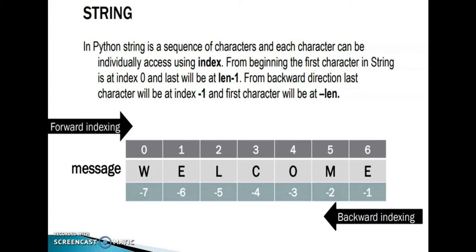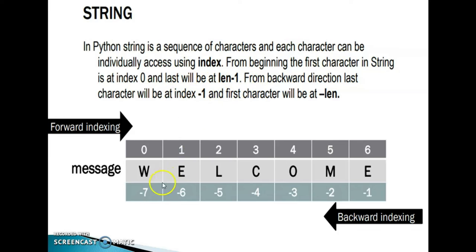In Python, a string is a sequence of characters and each character can be individually accessed using an index. For example, in 'welcome': W is at index 0, E at index 1, L at index 2, C at index 3, O at index 4, M at index 5, E at index 6. The first character is at index 0 and the last at index len-1. With 7 characters, the last is at index 6 (7 minus 1).